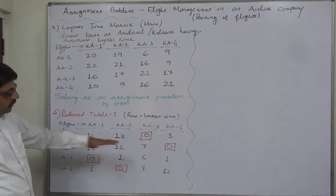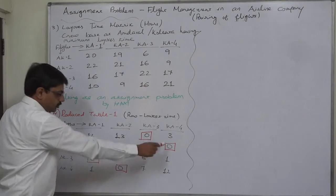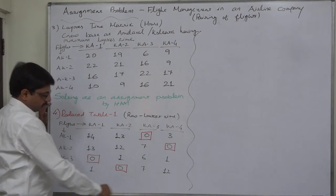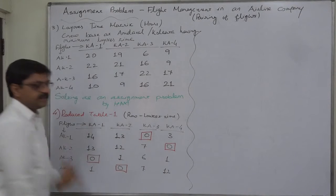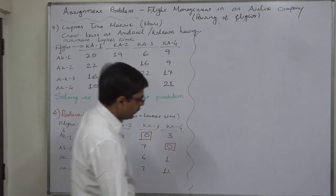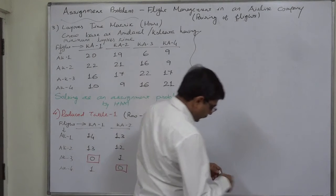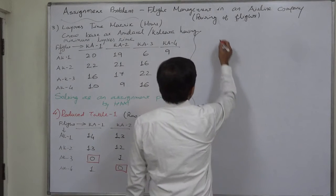Now check if all the rows and columns are with only one assignment. Row 1 yes, row 2 yes, row 3 yes, row 4 yes, column 1 yes, column 2 yes, column 3 yes, column 4 yes. That means this is the optimal solution to this problem. So we have to prepare the optimal pairing of flights.